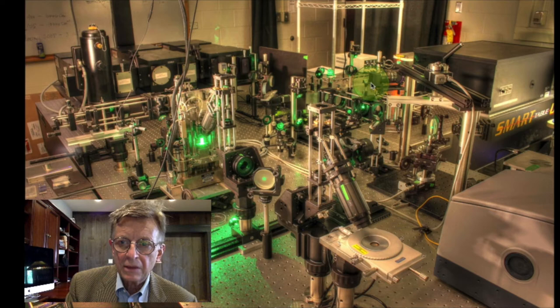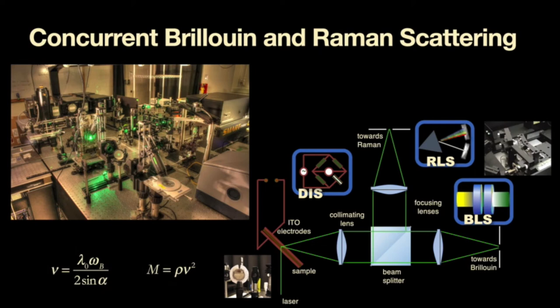So we can in essence do a simultaneous Brillouin and Raman light scattering measurement whereas Raman gives us information about the chemistry and local structure of the material and Brillouin gives us information about the nanoscale mechanical properties.